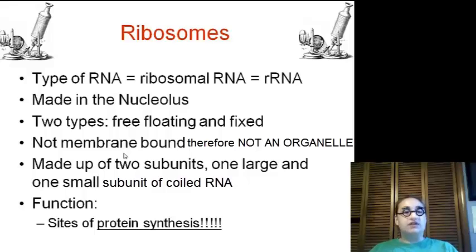Then we have our ribosomes. Our ribosomes are RNA, known as ribosomal RNA, or you might see it as rRNA. It is made in the nucleolus of the nucleus. There are two types. There are free-floating out in the cytosol, and then there are fixed. Some are actually bound to the rough endoplasmic reticulum. They do not have a membrane that surrounds them. They are made up of two subunits, a large and a small, and they're used for protein synthesis to make our proteins.